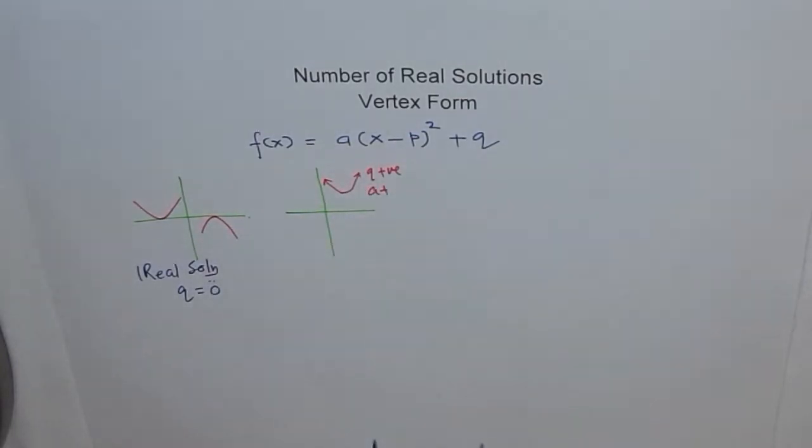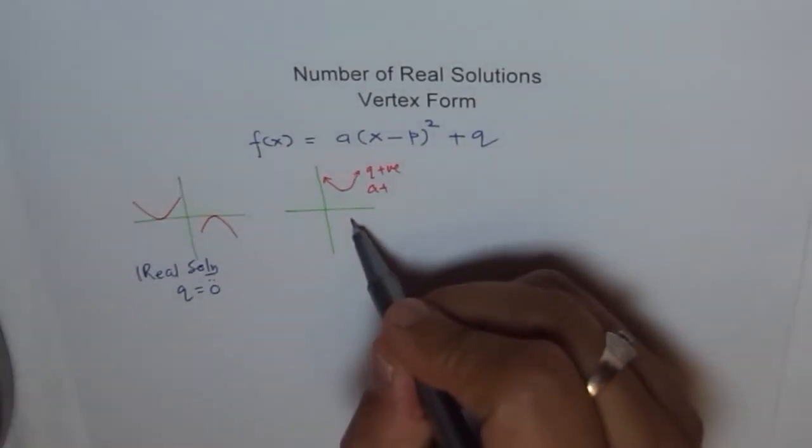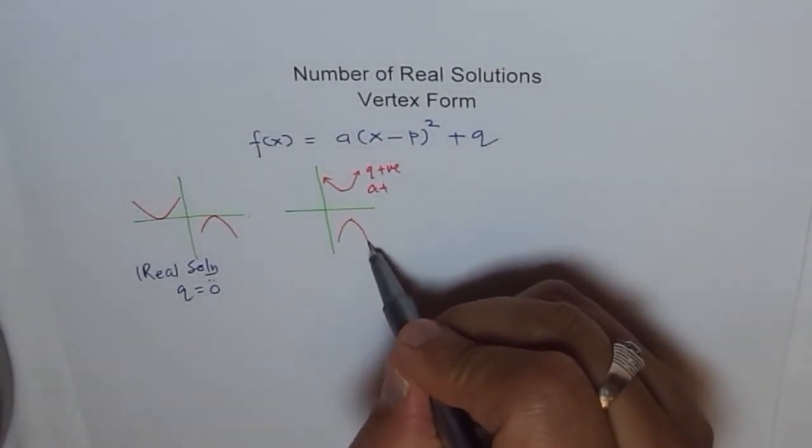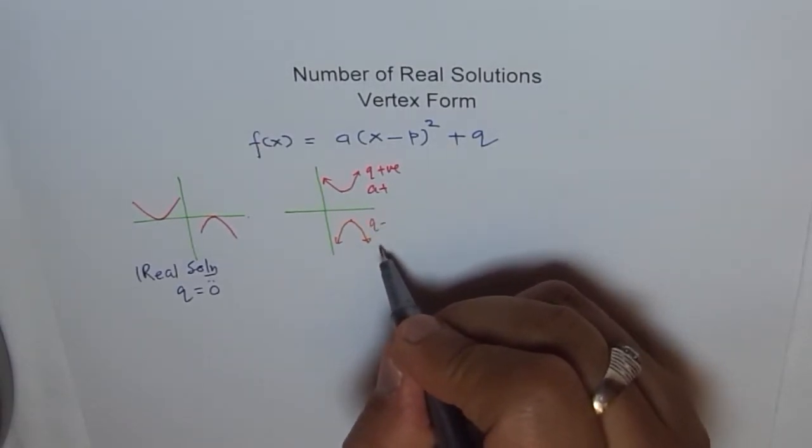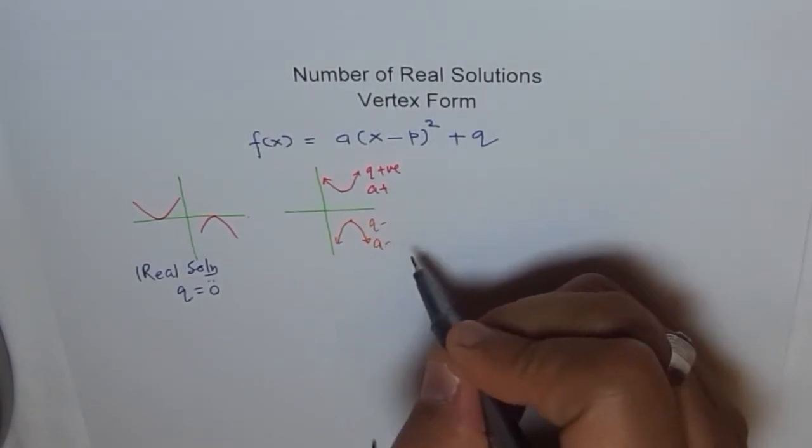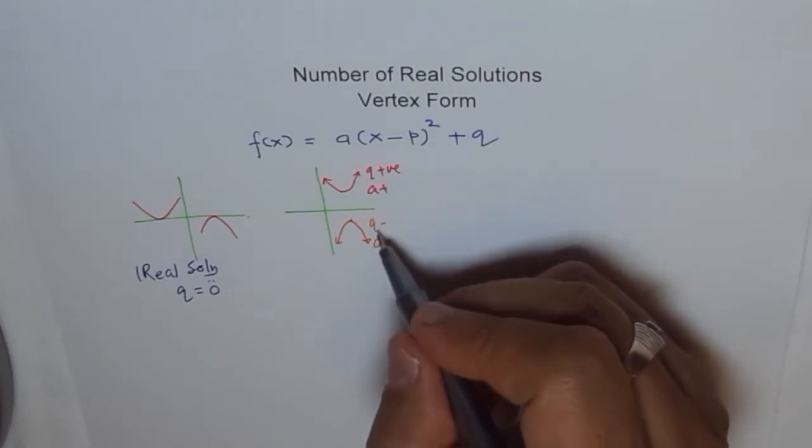Or, the solution could be that vertex is here and it opens downwards. That means what? That means q is negative and a is also negative. Both same sign. That is important.